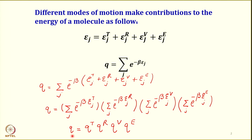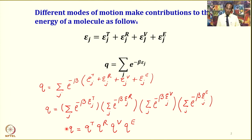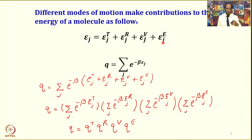The overall molecular partition function equals the translational contribution multiplied by the rotational contribution multiplied by the vibrational contribution multiplied by the electronic contribution. A very important point to note: energy is additive due to all contributions, but the molecular partition function is multiplicative. When you write energies, it is the addition of translational, rotational, vibrational, and electronic. But when you write the molecular partition function, it is multiplicative.